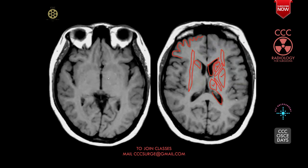In more caudal images, you could see the subthalamic region. There may be multiple punctate hypointense areas — those are the lenticulostriate branches of the middle cerebral artery supplying the basal ganglia region. Here you can see a large hypointense or black sulcus separating the temporal lobe from the frontal lobe — this is called the sylvian fissure. The basal frontal lobe and the temporal lobe are separated by the sylvian fissure.